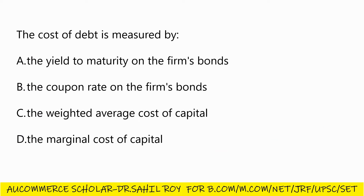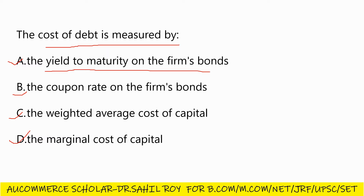Our next question: the cost of debt is measured by — the coupon rate on the firm's bonds, the weighted average cost of capital, the marginal cost of capital, or the yield to maturity on the firm's bonds. The correct answer is Option A: the yield to maturity on the firm's bonds.